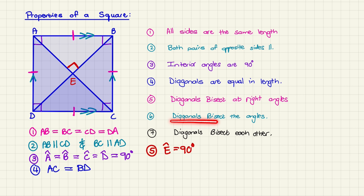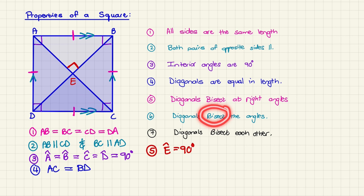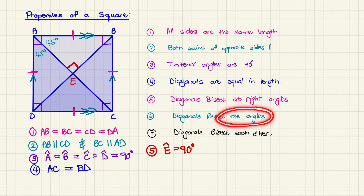Property number six: the diagonals bisect the angles. The diagonals cut the interior angles in half. So angle A would be cut into two equal pieces — if the whole angle A is 90 degrees, then each of those smaller angles is 45 degrees. So all of the interior angles are bisected by the diagonals, giving 45 degrees all the way through.